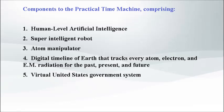There are primarily five components that make up my practical time machine. The reader should have a basic understanding of the invention in terms of components, data structure, and processes. The five components are: 1. Human Level Artificial Intelligence, 2. Super Intelligent Robot, 3. Atom Manipulator, 4. Digital Timeline of Earth that tracks every atom, electron, and EM radiation for the past, present, and future, and 5. Virtual United States Government System.